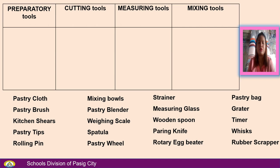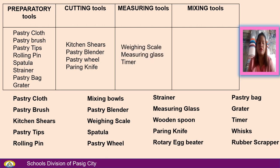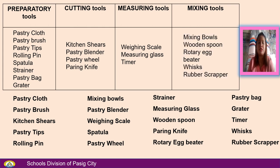Let us check if you got the correct classification of tools. For preparatory tools: pastry cloth, pastry brush, pastry tips, rolling pin, spatula, strainer, pastry bag, and grater. For cutting tools: kitchen shears, pastry blender, pastry wheel, and paring knife. For measuring tools: weighing scale, measuring glass, and timer. For mixing tools: mixing bowls, wooden spoon, rotary egg beater, whisk, and rubber scraper.